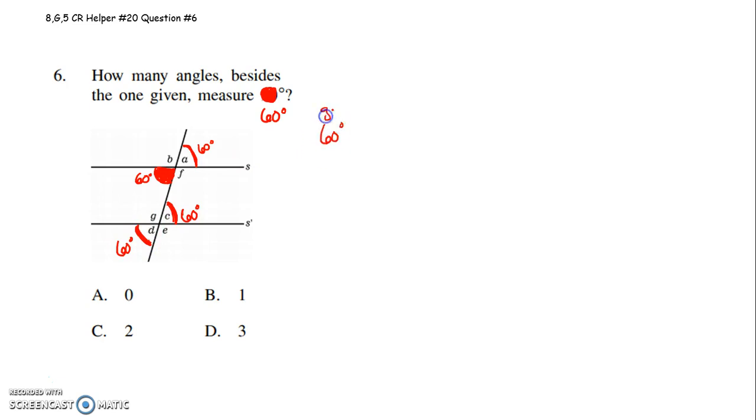So the given angle, the given 60 degree angle, and angle A are vertical. Vertical angles are congruent. Therefore, they're congruent.